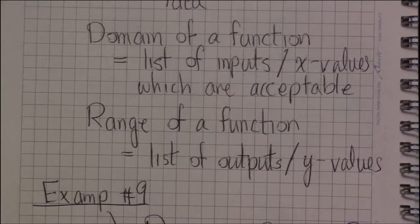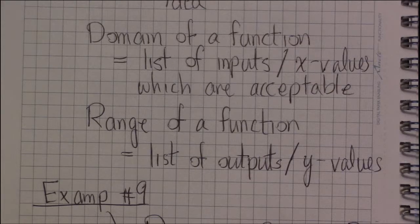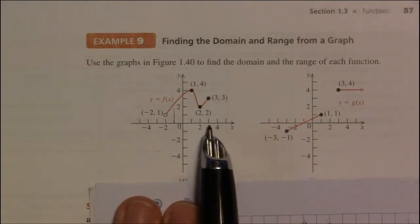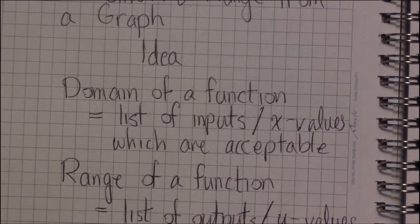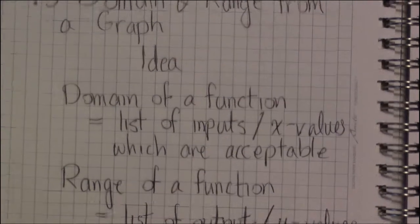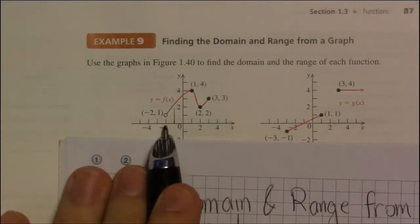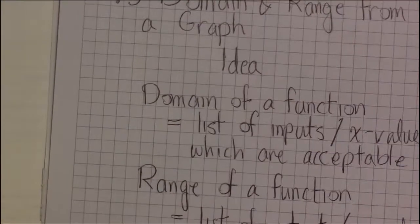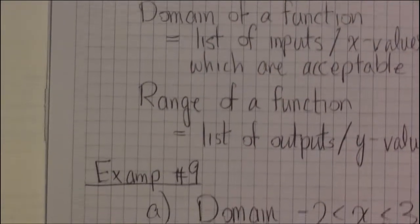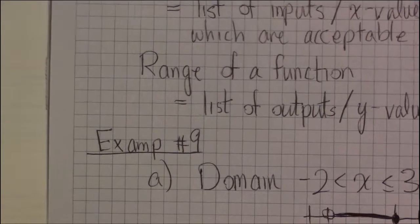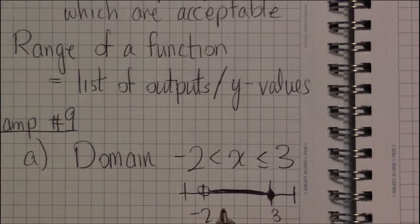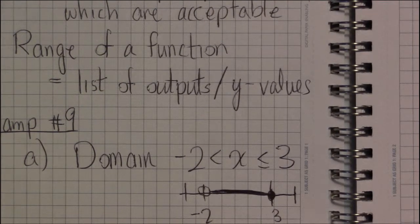This is what the smashed graph looks like on the x-axis. Everything between minus 2 and 3 is covered. 3 had a dot, had this point over it, and so there is going to be something smashed onto x equals 3, but there's nothing going to be smashed onto x equals negative 2. So, that's why we exclude minus 2 and include 3.